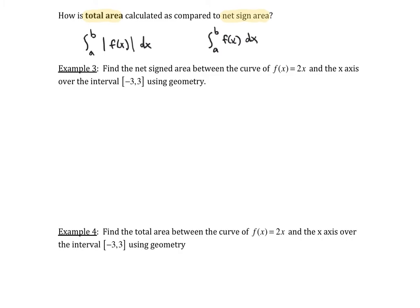Let's first calculate the net signed area of this curve, f(x) = 2x, over the interval from negative 3 to 3, and we want to use geometry to do this. Let me draw a picture. So let's draw a y-axis and an x-axis, and let's label here: 0, 1, 2, 3, and then negative 1, negative 2, negative 3.